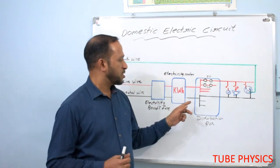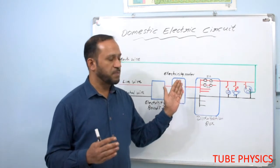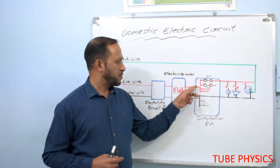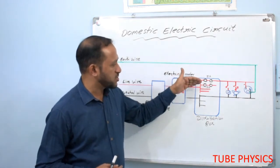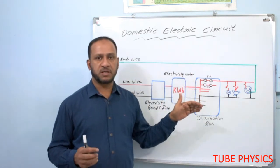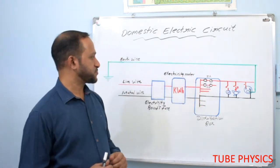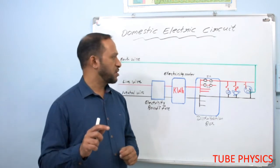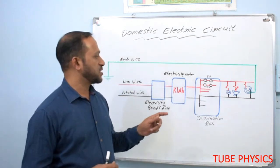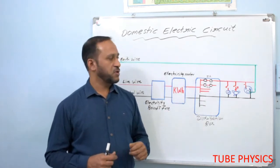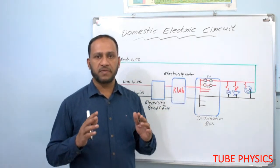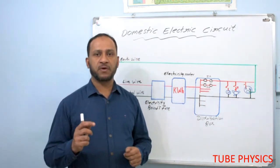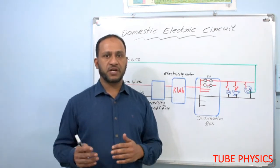The main distribution box is where we plan the number of branches needed for our circuit. In the main distribution box, we can connect a main switch and branch out the circuit into the required number of branches depending upon the need of the building. In each branch, we can have two standard lines: one for a current rating of 5 ampere, used for normal devices like bulbs and fans, and another for 15 ampere, used for high power devices like AC, geyser, and refrigerator.